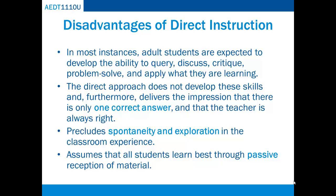Such diversions may have positive, yet not easily measurable results. Education solely by direct method assumes that only that which can be measured is valuable. Finally, the direct method assumes that all students learn best through passive reception of material. Research into learning styles and neuroscience has been persuasive in determining that this is not always the case.